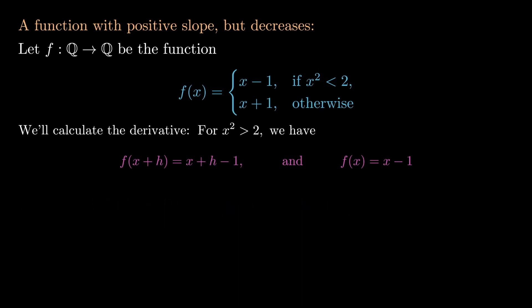So let's do the second case now, in which case we'll consider x squared to be greater than 2. In this case we can take x plus h squared to be greater than 2, in which case the formula tells us that f of x plus h is equal to x plus h plus 1, and f of x is going to be x plus 1.